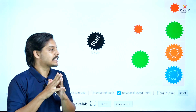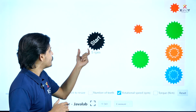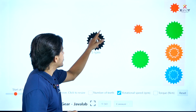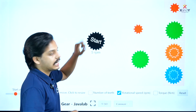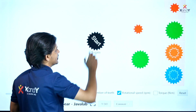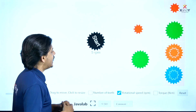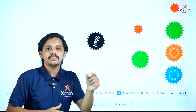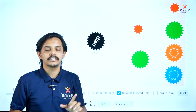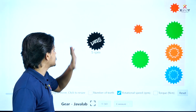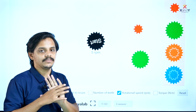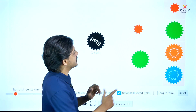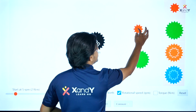We have a motor here. That motor is rotating in a clockwise direction. We are going to rotate at 5 rpm — that is, 5 rotations per minute. In 5 rpm, we are going to have a small gear.